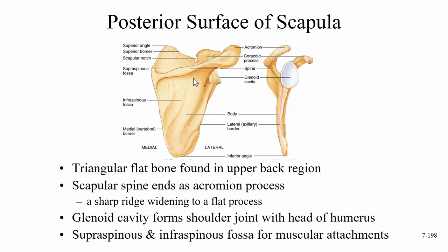The scapula has a couple of fossae — large indentations. Above the spine is a large area: since it's superior to the spine and it's a fossa, we call it the supraspinous fossa. Below the spine is the infraspinous fossa.